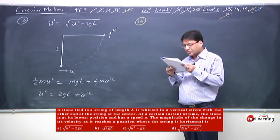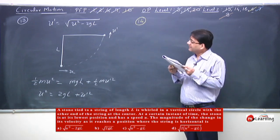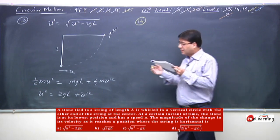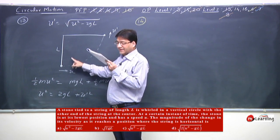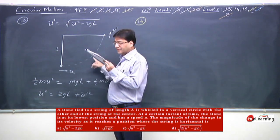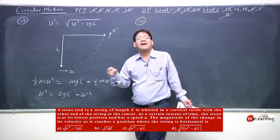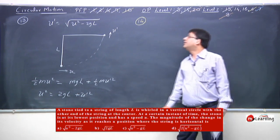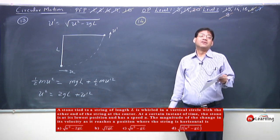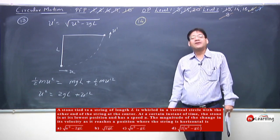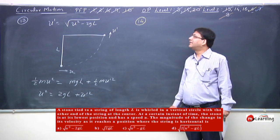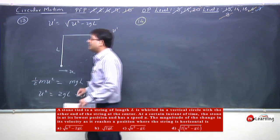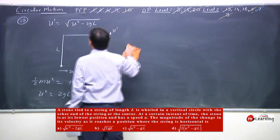Wait — the question asked for magnitude of change in velocity, not just the final speed. We misread the problem. They asked for magnitude of change in velocity, and we only found the final speed. Let's redo the 13th problem correctly from here.